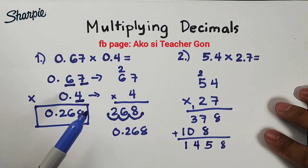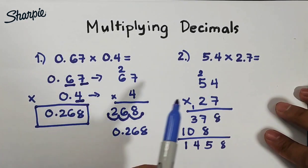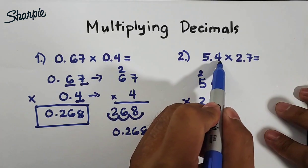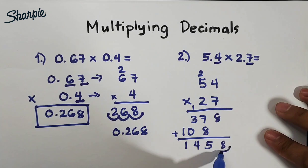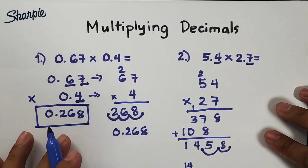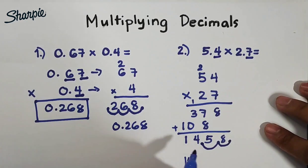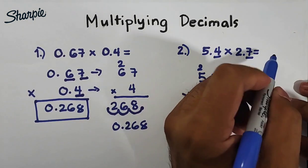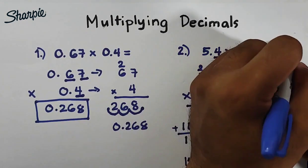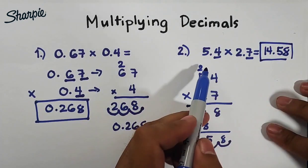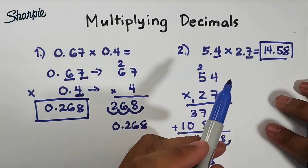So what we need to do here, same with question number 1, we need to count the number of decimal values or decimal places. We have 1 and 2. So starting here we will count 1 and 2. Therefore the correct answer is 14.58. So we will write here 14.58, that is the answer when you multiply 5.4 by 2.7.